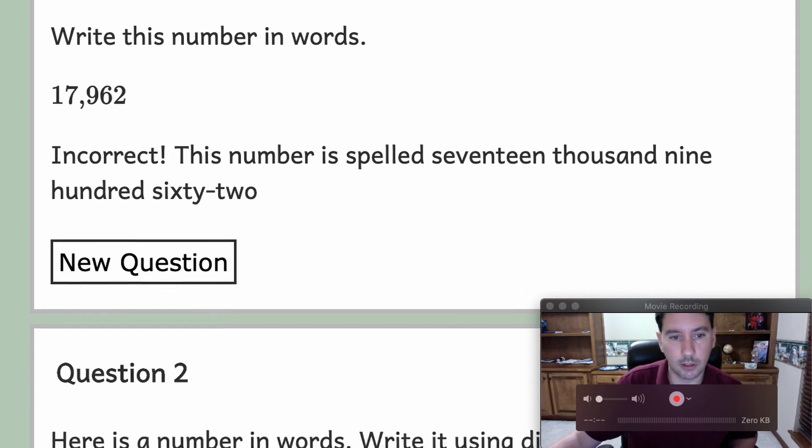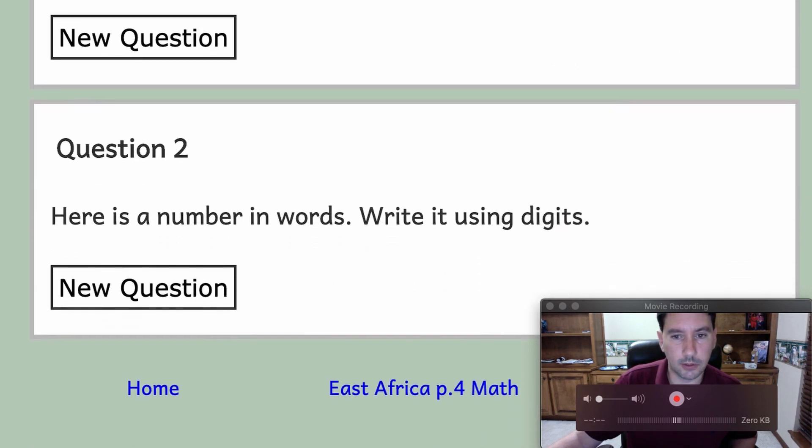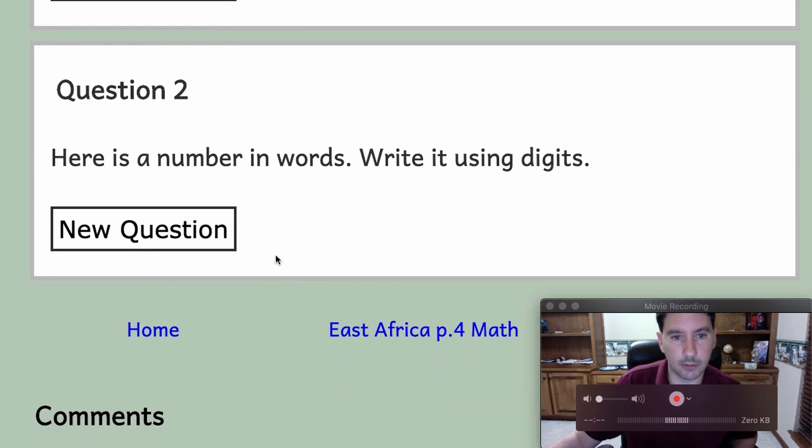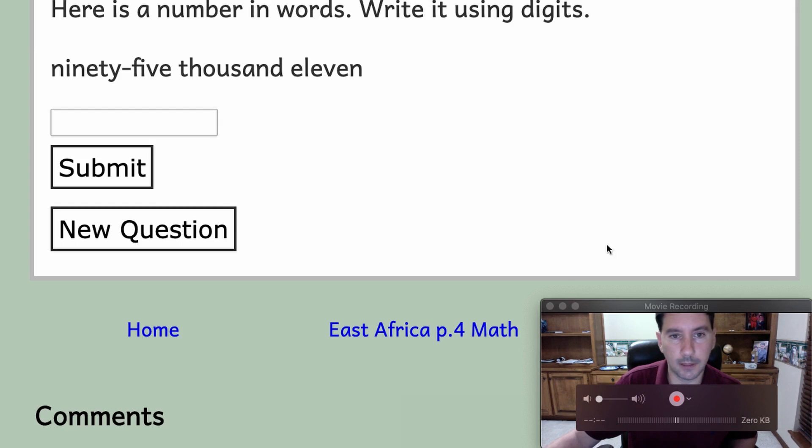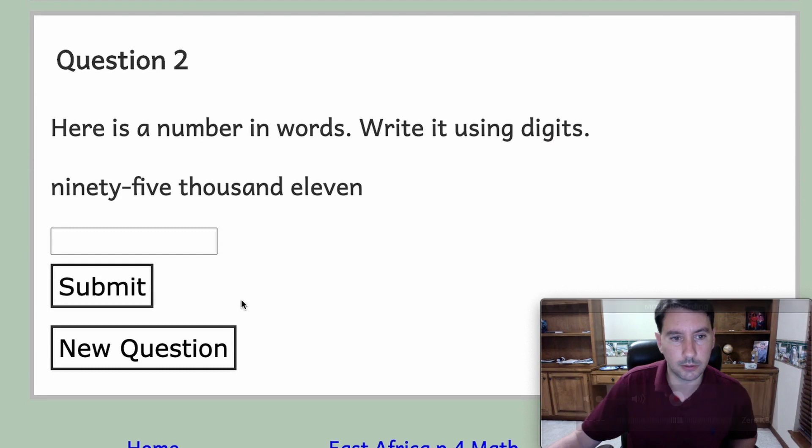If you get one wrong it will tell you the correct spelling and you can check to see what you did wrong. Question 2: the other way you can practice is by going the other way. It's going to give you a number in words, write it using digits. Let's try this: ninety-five thousand eleven.